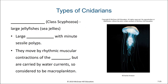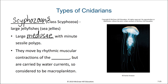The next class of cnidarians are the scyphozoans. This is the class with the large marine jellyfish — a very large medusa. The polyp stage of a scyphozoan's life is usually very limited, and the polyps themselves are very small. The medusa stage is definitely the dominant life cycle for scyphozoans. They move by rhythmic muscular contraction of the bell, yet even though they generate this swimming motion, they are carried by water currents, so they are considered to be macroplankton.